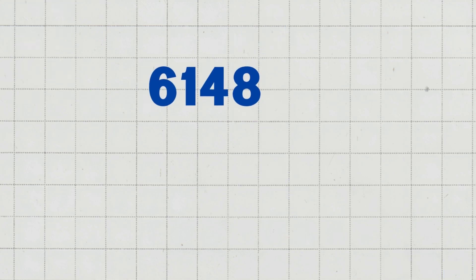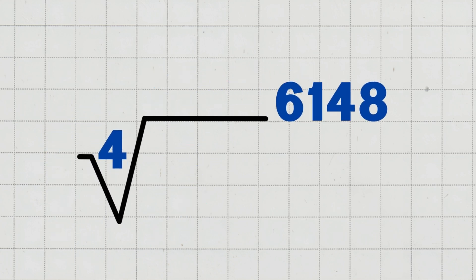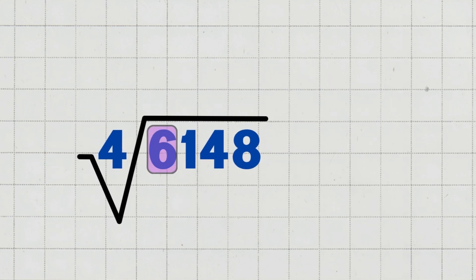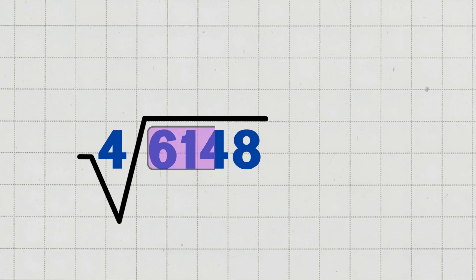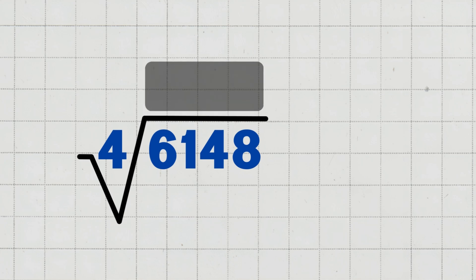Let's solve six thousand one hundred and forty-eight divided by four. Step one: set up the problem. We are dividing six thousand one hundred and forty-eight by four. Six thousand one hundred and forty-eight is the dividend, the number being divided. Four is the divisor, the number we divide by. The answer we get is called the quotient.